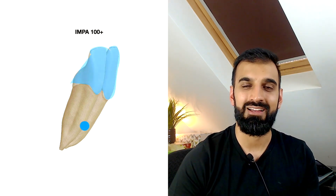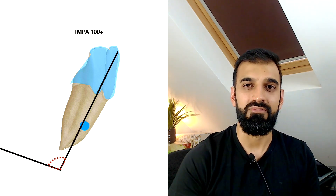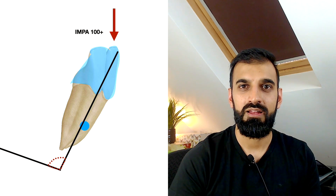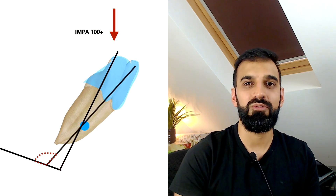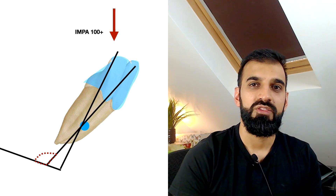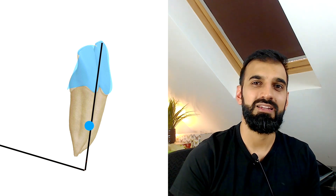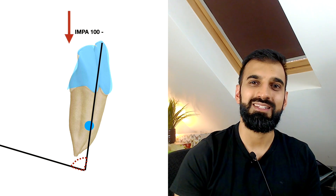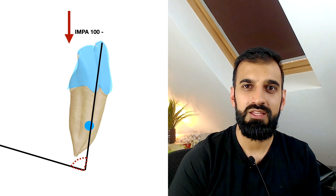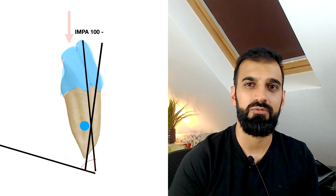Their findings showed that when the lower incisor to mandibular plane angle exceeded 100 degrees — proclined lower incisors — the intrusive force was anterior to the centre of rotation. Naturally, that results in further proclination taking place, or buccal crown torque and lingual root torque occurring. The opposite was true when the lower incisor to mandibular plane angle was found to be less than 100 degrees, falling into the average patient. This intrusive force was now behind the centre of rotation, resulting in lingual crown torque and buccal root torque occurring.